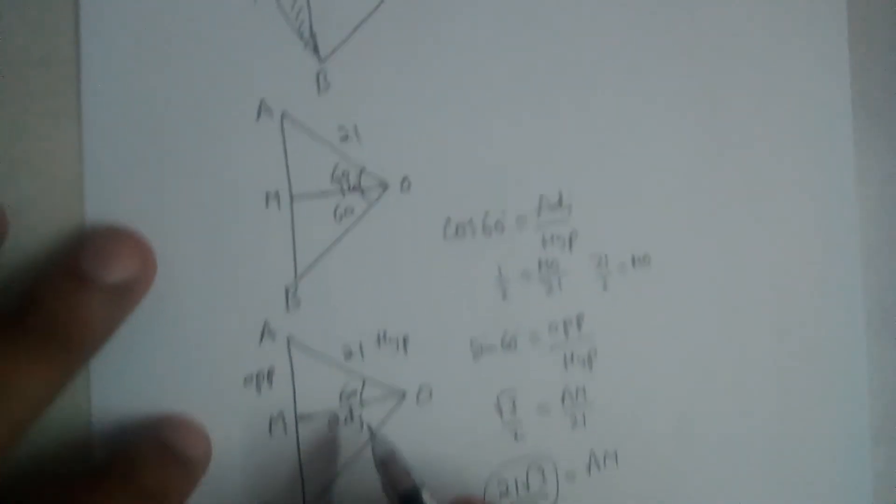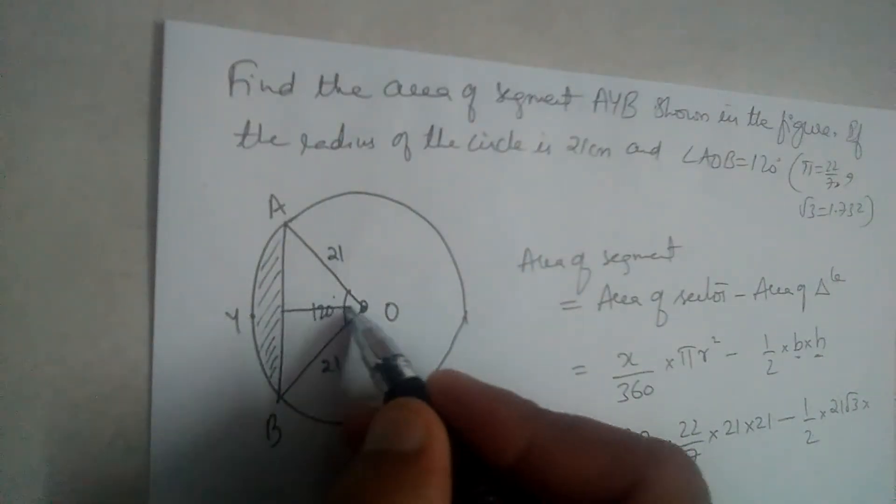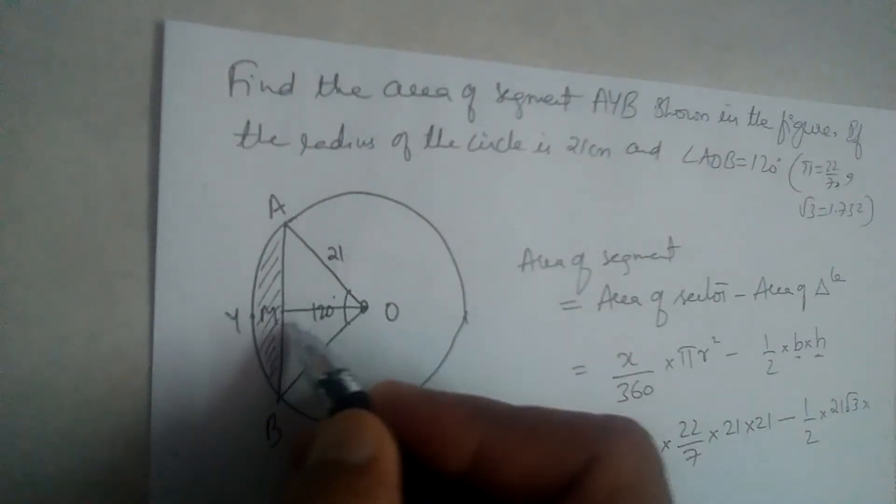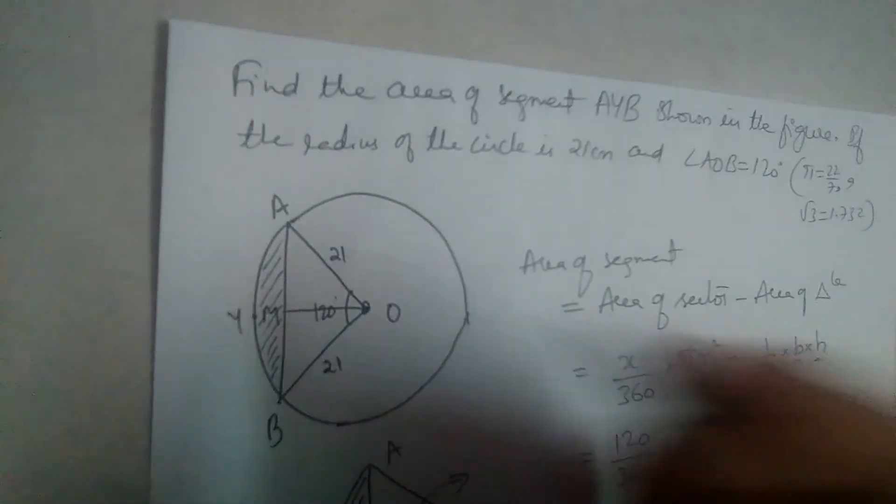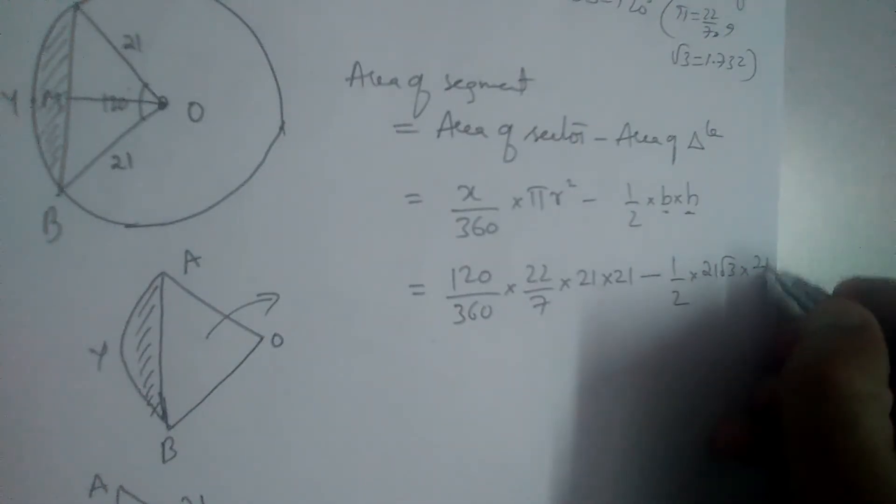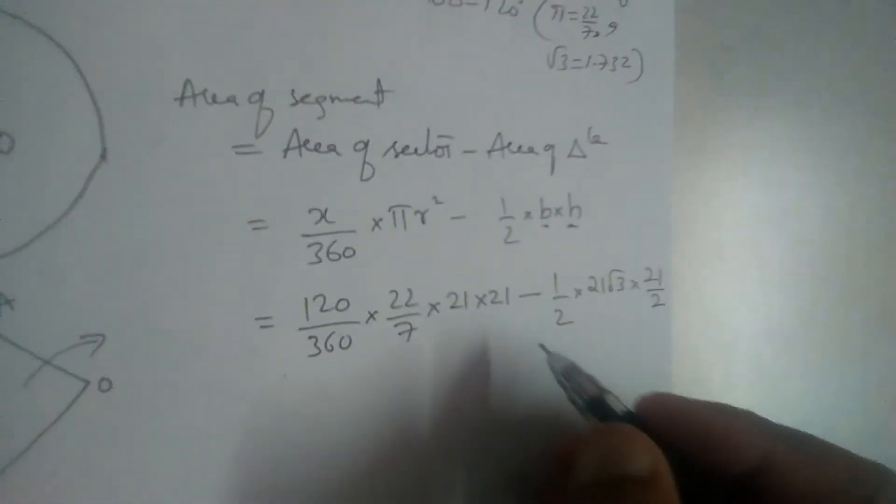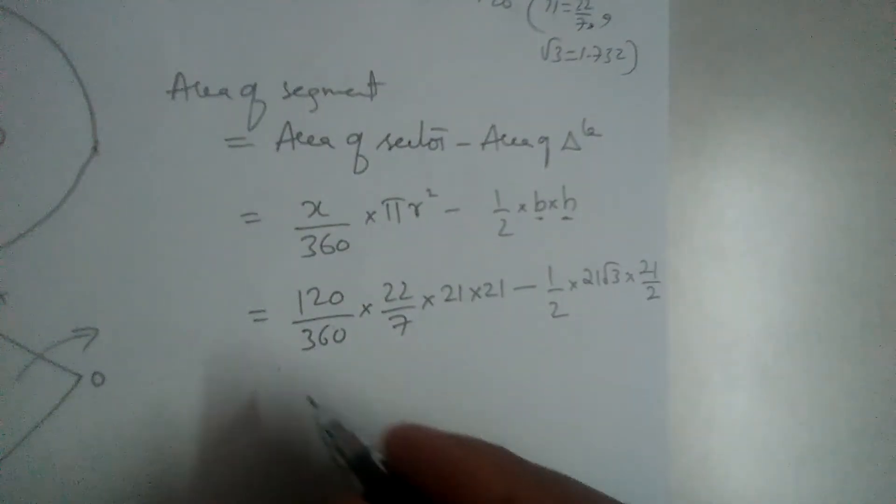So MO is height of the triangle. So we drop a perpendicular, so this was M, so this is MO, height of the triangle. What is it, 21 divided by 2. We have substituted all the values, now let us simplify. 120 will get cancelled, this will be 1 by 3.